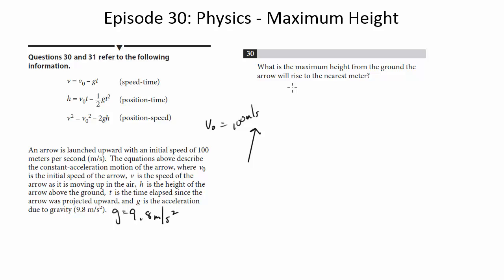So our first question: what is the maximum height from the ground that the arrow will rise to the nearest meter? So we want the maximum height. There's probably a lot of ways to do this mathematically, but there's one way which I think is easiest, which is to look at this equation.